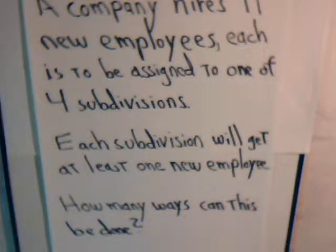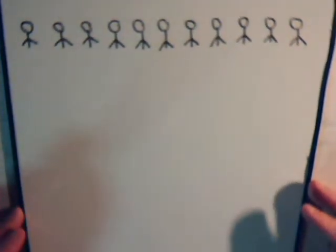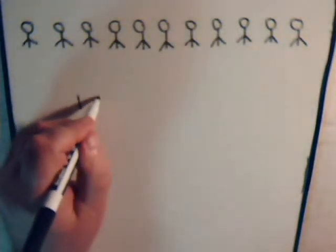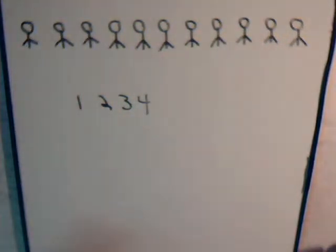This can be solved as a permutation problem. To show how that's done, imagine that we have the 11 different employees, and what we could do is assign the numbers 1 through 4 — that would tell them the subdivision to assign them to.